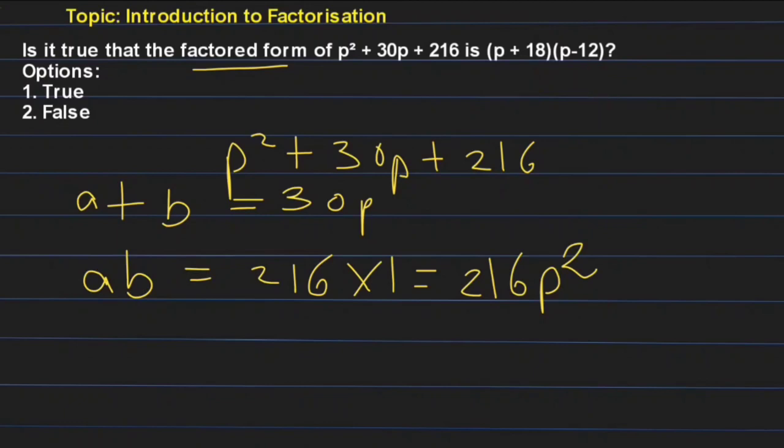And if you add them, they also give 30. So we can take these two numbers - that are a and b.